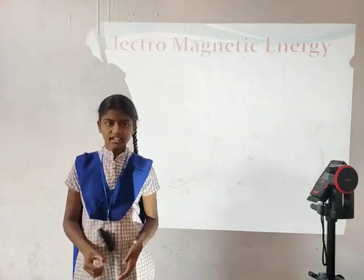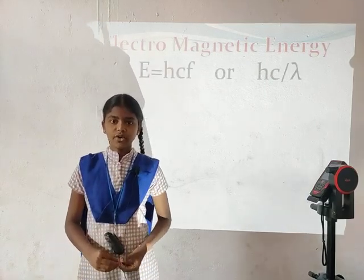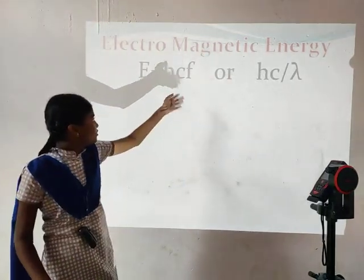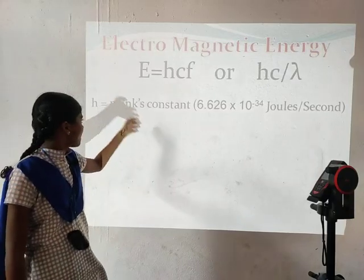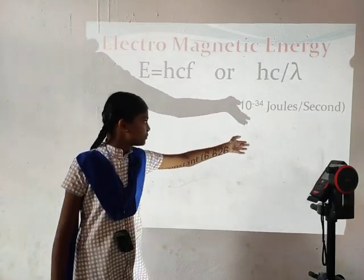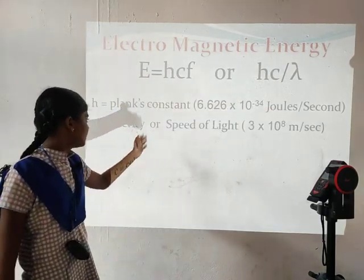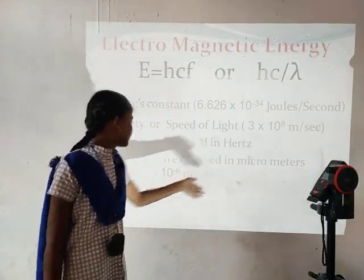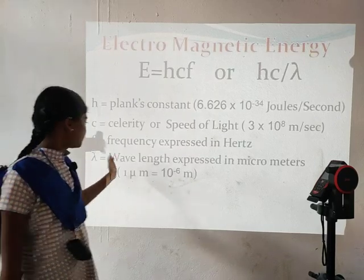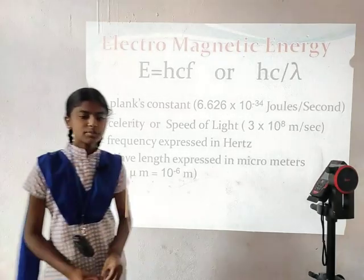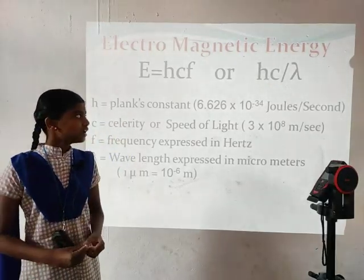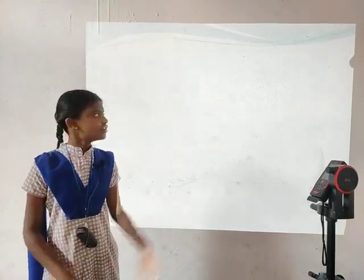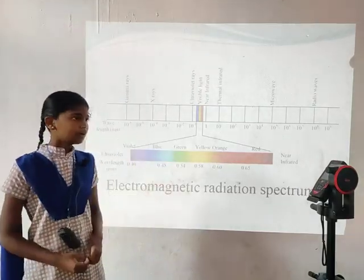Electromagnetic energy E can be expressed in terms of frequency or wavelength lambda, given by E = hcf or E = hc/lambda. Here, h is Planck's constant equal to 6.626 × 10⁻³⁴ joule-seconds; c is the speed of light equal to 3 × 10⁸ meters per second; f is frequency expressed in hertz; and lambda is wavelength expressed in micrometers, where 1 micrometer equals 10⁻⁶ meters. From these equations: shorter wavelengths have higher energy content, and longer wavelengths have lower energy content.